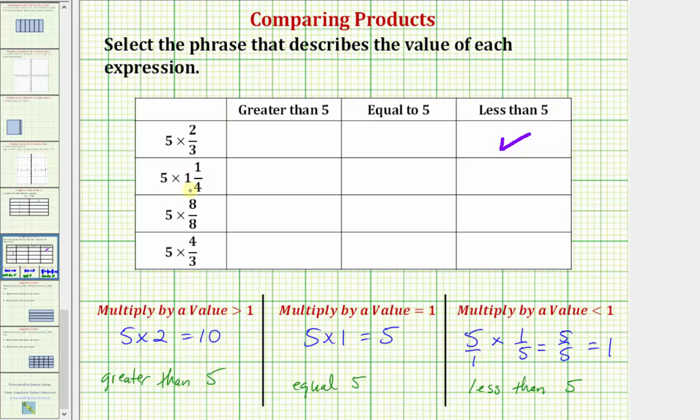Next we have five times one and one-fourth. One and one-fourth is greater than one, and therefore the product is going to be greater than five.